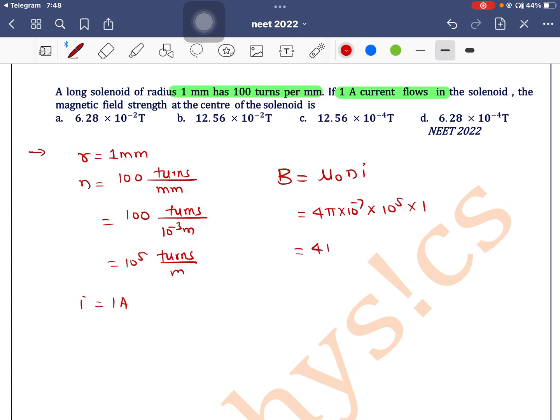So which is equal to 4π into 10 to the power minus 2. So as π is 3.14, 3.14 into 4 will be equal to 12.56 into 10 to the power minus 2 tesla. So option B is the correct one.